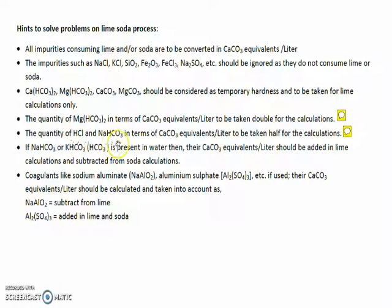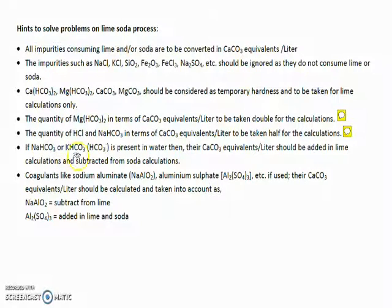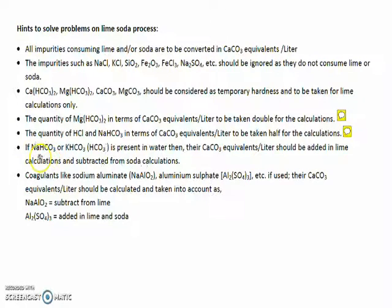The quantity of HCl and NaHCO₃ or KHCO₃ in terms of CaCO₃ equivalents per liter is to be taken as half for calculations, because two molecules of HCl require only one molecule of calcium hydroxide (lime) — so only half the concentration is considered. If NaHCO₃ or KHCO₃ is present in water, the CaCO₃ equivalents per liter should be added in lime calculations and subtracted from soda calculations, because these salts consume lime and also act like soda.